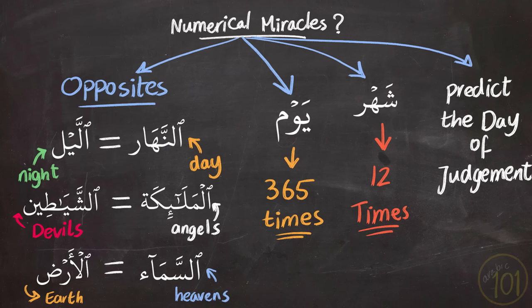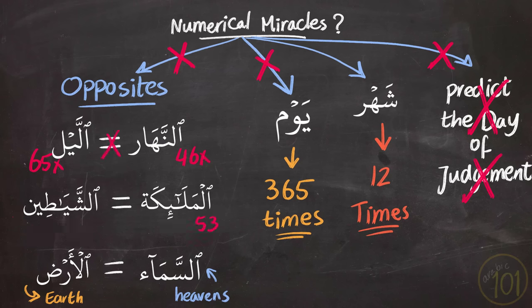But here's the problem: the majority of these claims are fabricated. They are just simply not true. And a quick search on any website of the Quran will show you that this is indeed not true. Numbers are just simply not the same as they are claimed.